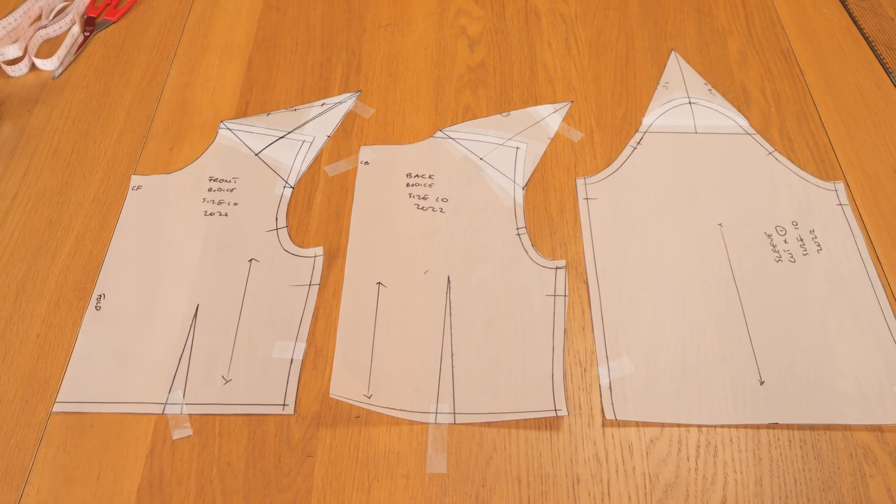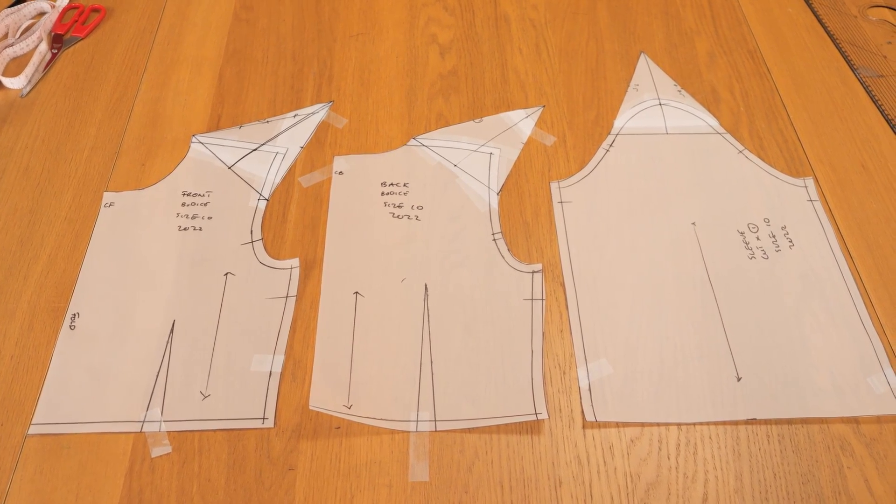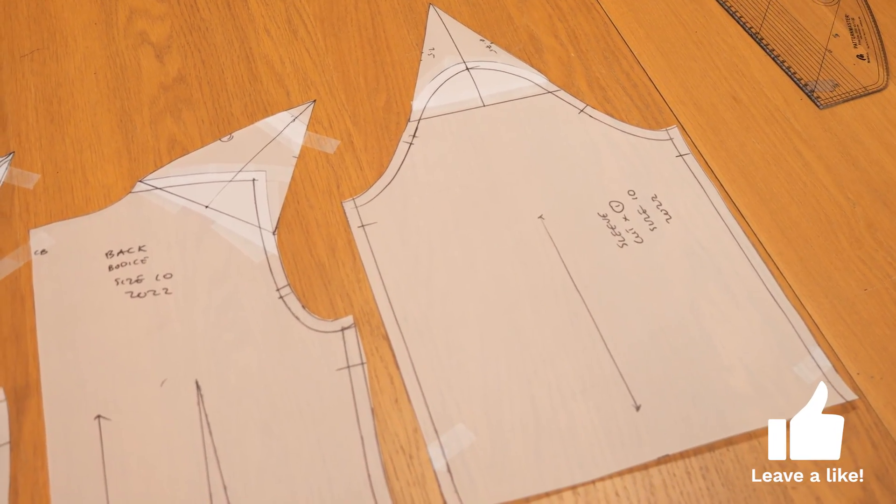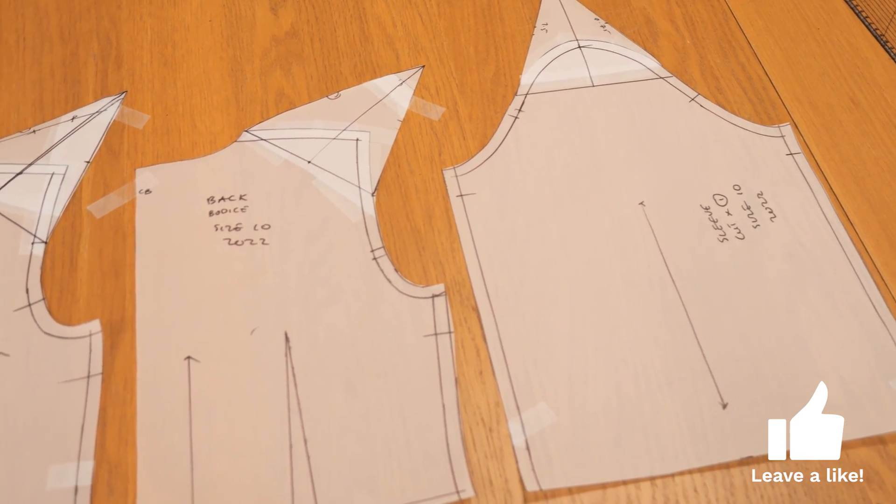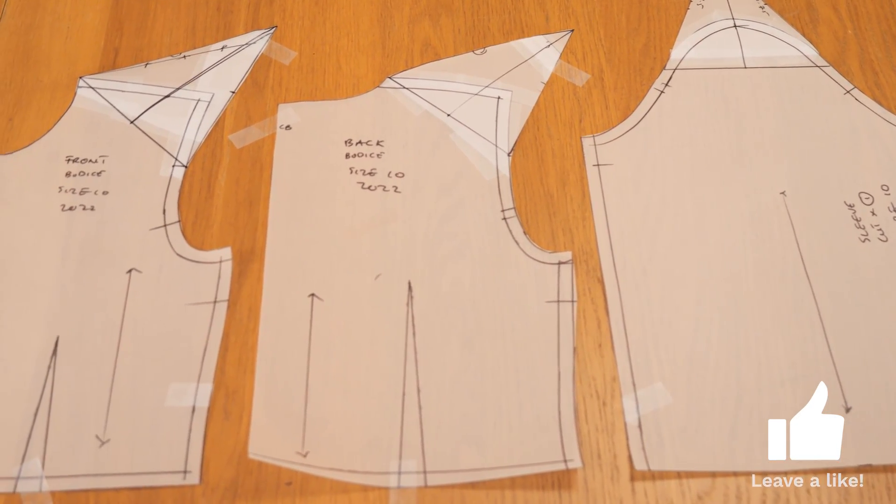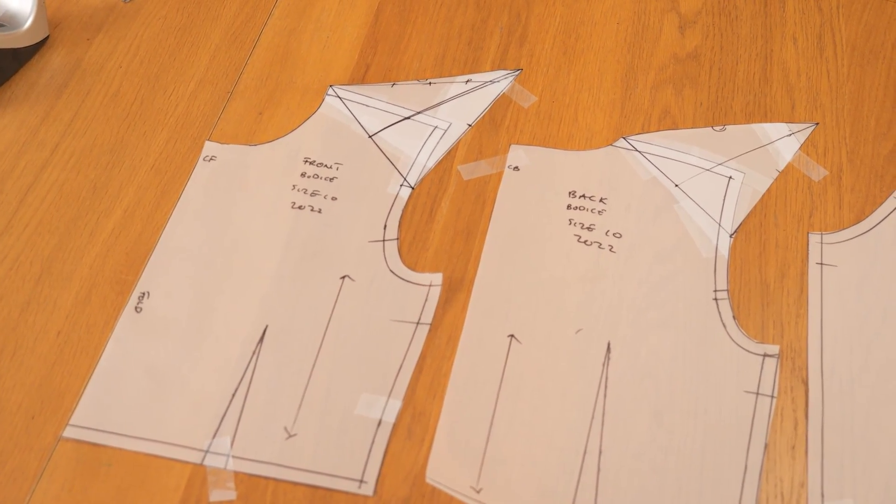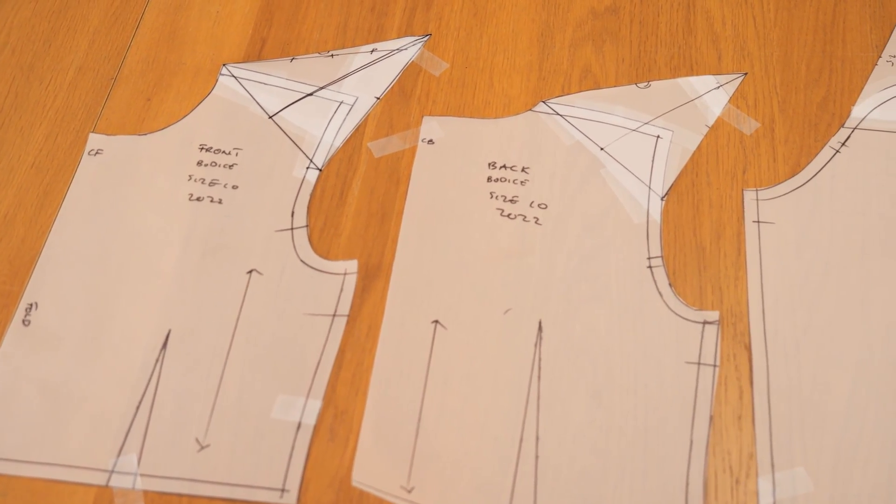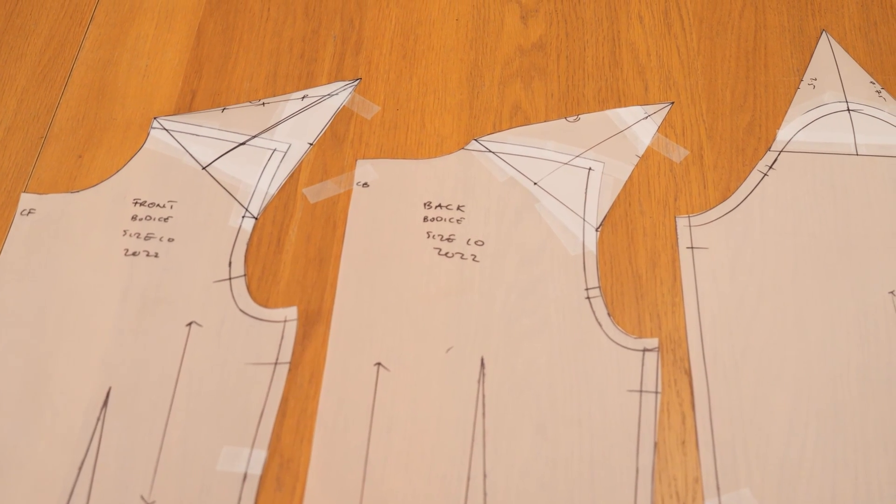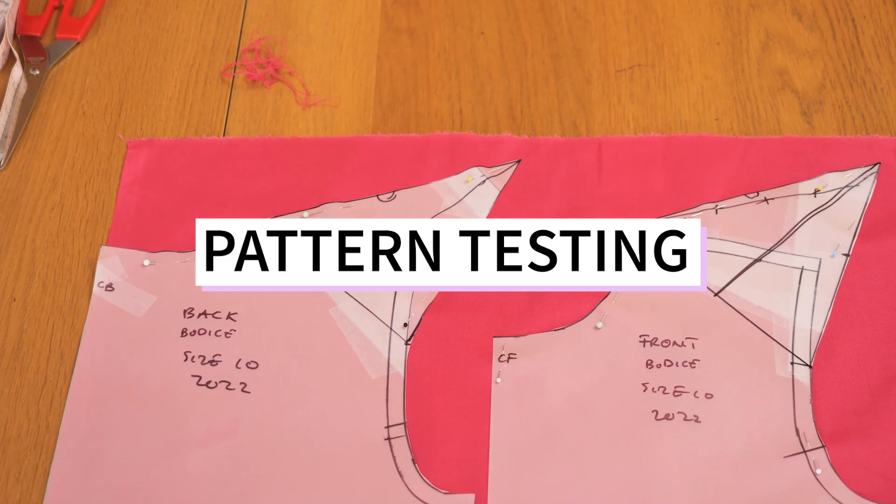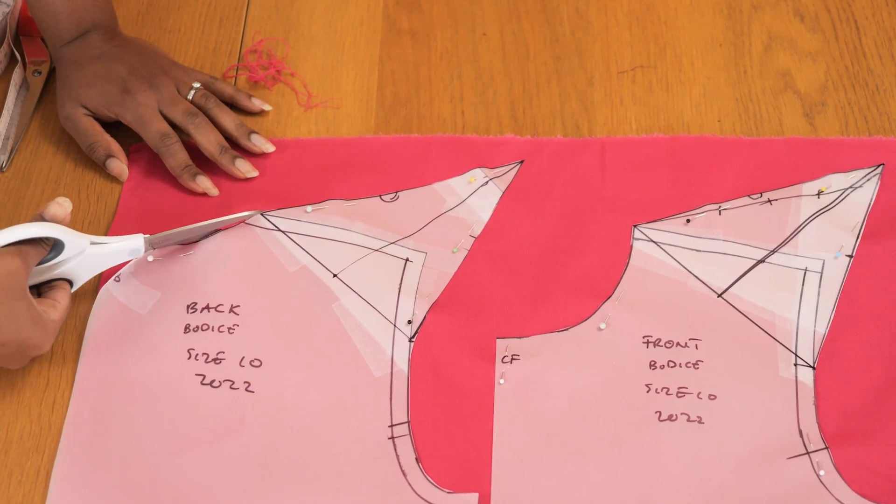Now, these are the patterns I ended up with. We have the adapted sleeve, the adapted front and back. I say if it's something you don't figure out the first time, don't get worried, don't get frustrated. Try again until it works. It even took me two tries until I got to this point. I think I would even try this again, maybe on an actual garment, just so I have it properly figured out.